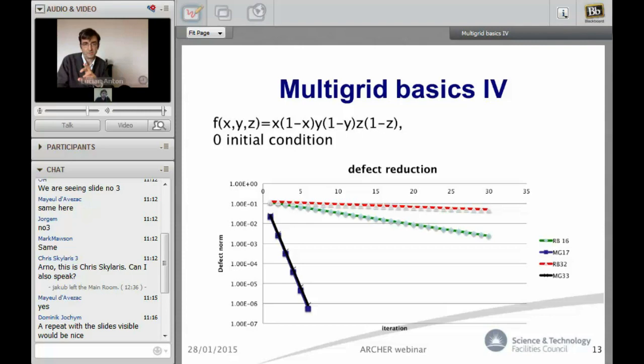Meanwhile, for black and blue you can see there are overlaps of the convergence, it's independent of the grid spacing.